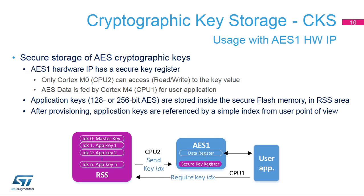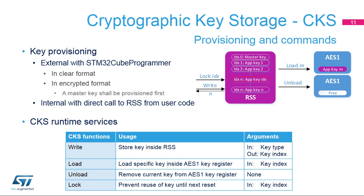The RSS offers a secure slot for storing AES cryptographic keys. These keys are intended for use with the AES-1 IP. The key register of this hardware block is only accessible by the Cortex-M0 Plus in a secure configuration. The AES-1 block of data is sent and fetched by the user application, while the key register is loaded or unloaded by the RSS upon user request. From the user point of view, the key is referenced by its index inside the RSS and its value can never be accessed. Keys can be provisioned using the STM32Cube Programmer tool through the device bootloader, either in the clear or encrypted using a master encryption key, which is previously provisioned in a safe place.